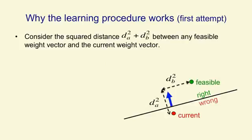We're going to use our geometric understanding of what's happening in weight space as a perceptron learns, to get a proof that the perceptron will eventually find a weight vector that gets the right answer for all of the training cases, if any such vector exists. Our proof is going to assume that there is a vector that gets the right answer for all training cases. We'll call that a feasible vector. An example of a feasible vector is shown by the green dot in the diagram.